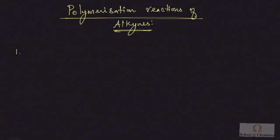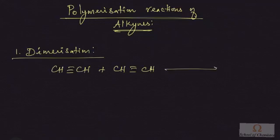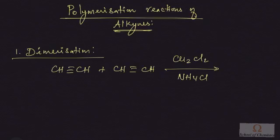The first one is dimerization. In dimerization, let us discuss dimerization of ethyne or acetylene. When I pass acetylene in a solution containing cuprous chloride having a little amount of ammonium chloride, this will undergo dimerization to give me vinyl acetylene.